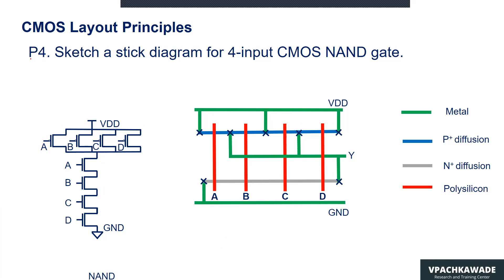Let's have a look at another example where we are asked to draw the layout for the four-input CMOS NAND gate. We can mark these terminals accordingly. The sources of the PMOS transistors are connected to VDD, and the source of the bottom NMOS is connected to ground. Similarly, all transistor terminals can be marked, and the drains of these transistors form the output. The drain of the NMOS is the output, located right here. This is how we complete the layout for the four-input CMOS NAND gate.